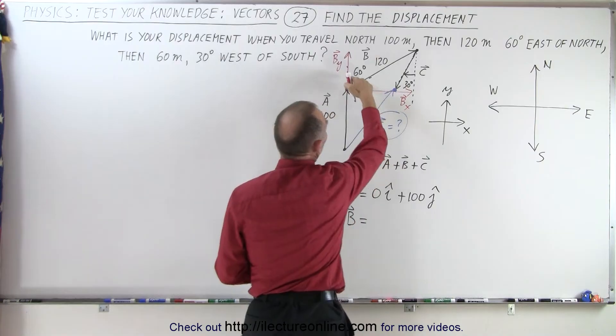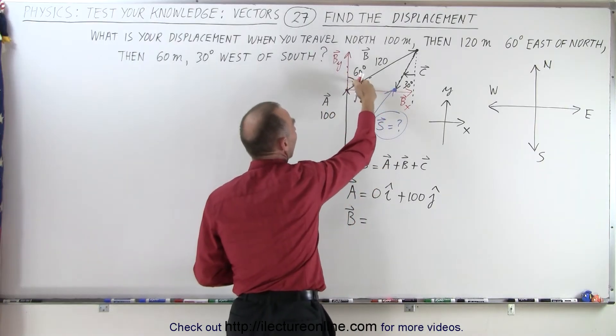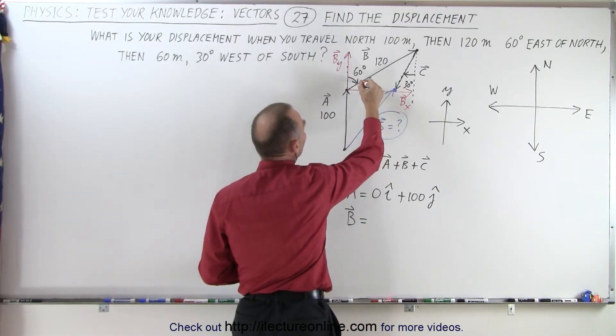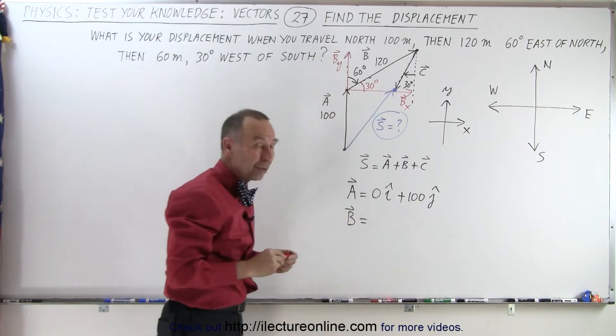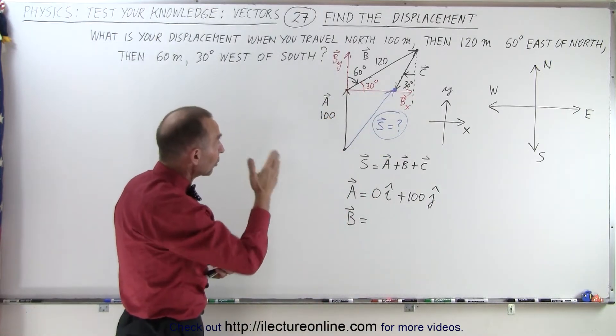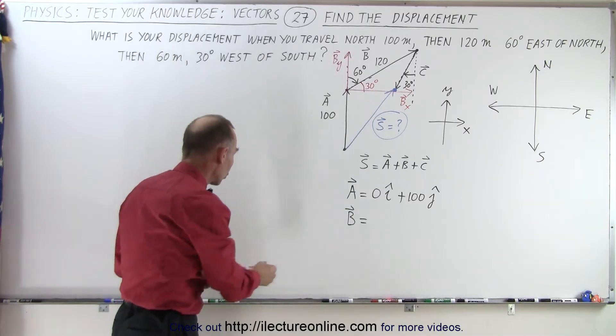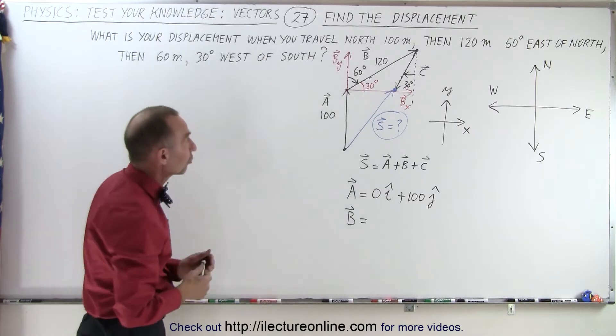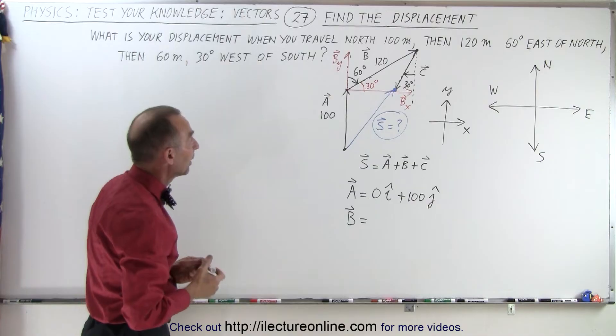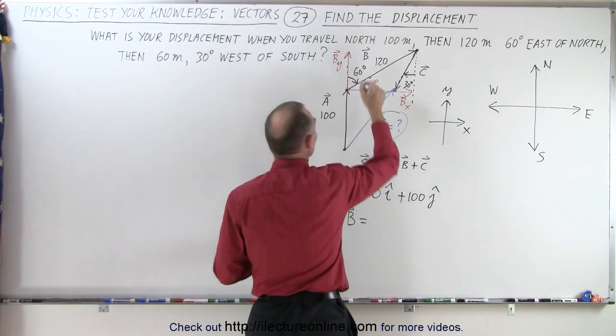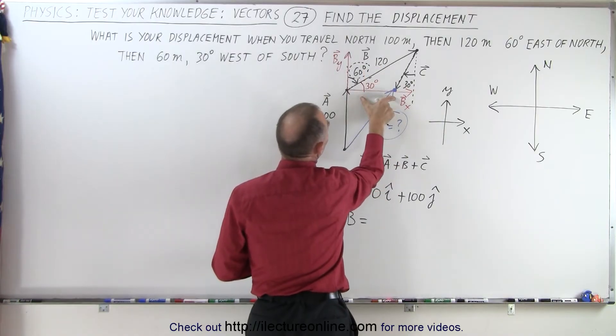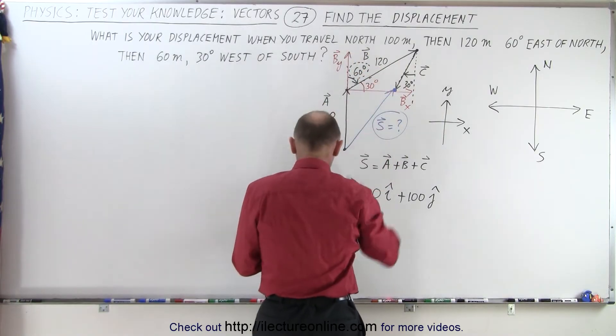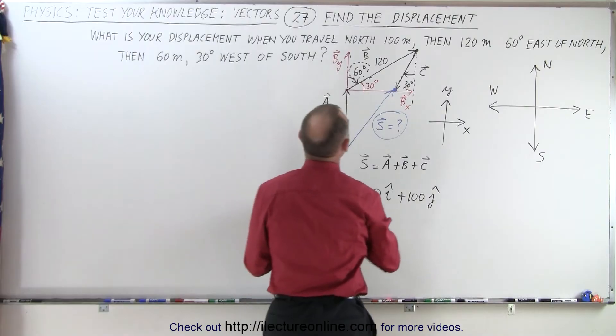And notice we have this vector, this angle right here, which means that this angle here is 30 degrees. So it doesn't matter which angle you use, a 60 degree angle or a 30 degree angle, but make sure you use the right trigonometric functions when you do so. If we're going to use the 60 degree angle, so I'm just going to show you how to do that. So here's the 60 degree angle.